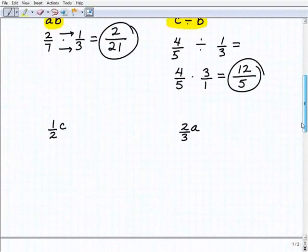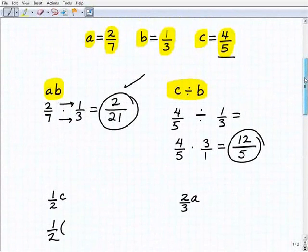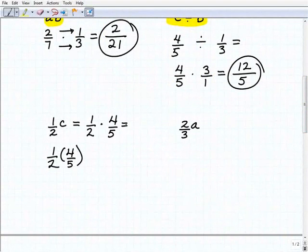Let's go ahead and take a look at our last two problems. So here we have one half c. So this is going to be one half times c. And if we recall, our c value is four fifths. This is going to be one half times four fifths. All right, so one half c means one half times c. So this would be one half times four fifths.